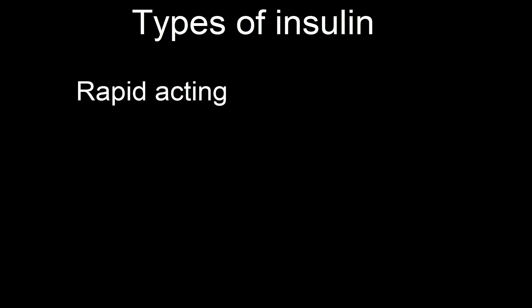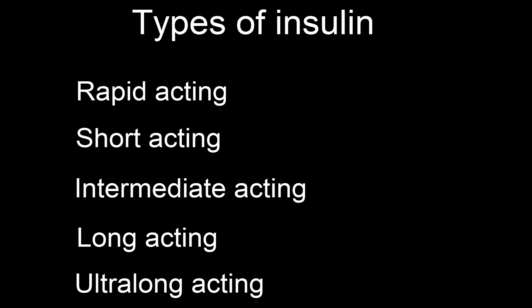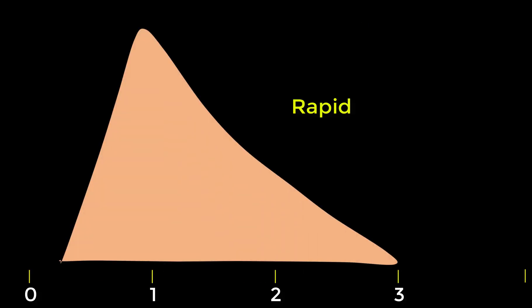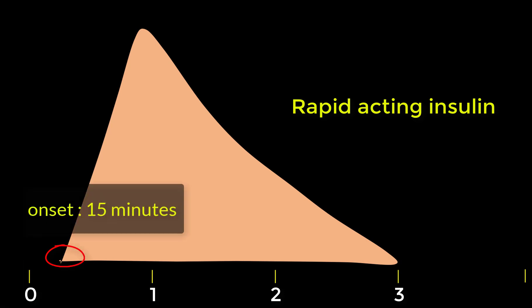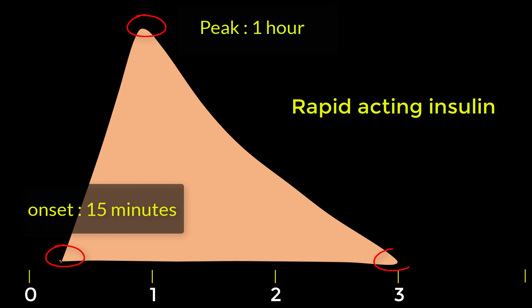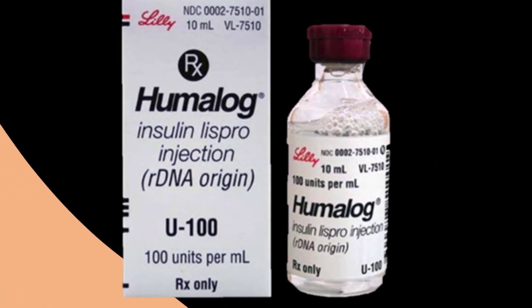Types of insulin include rapid-acting, short-acting, intermediate-acting, long-acting, and ultra long-acting insulin. Rapid-acting insulin starts to work about 15 minutes after injection, reaches its maximum effect in about one hour, and continues to work for about three hours. When it starts to work, this is known as onset; when it reaches its maximum effect, this is known as peak; and the total time of action is known as duration.